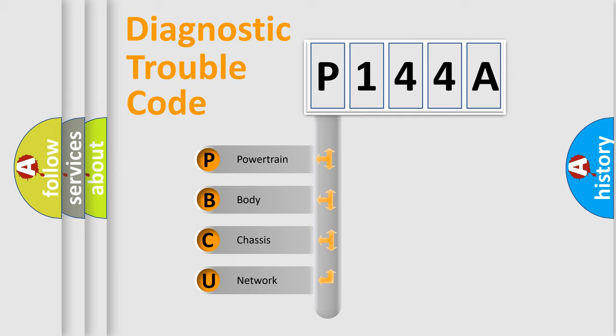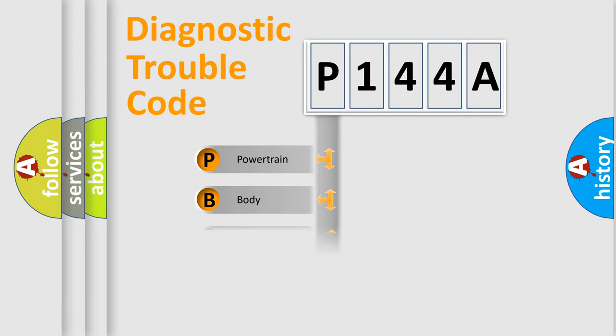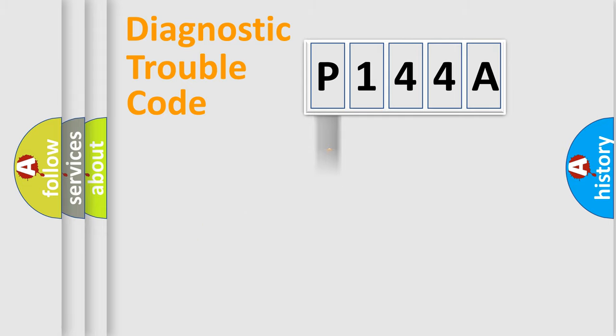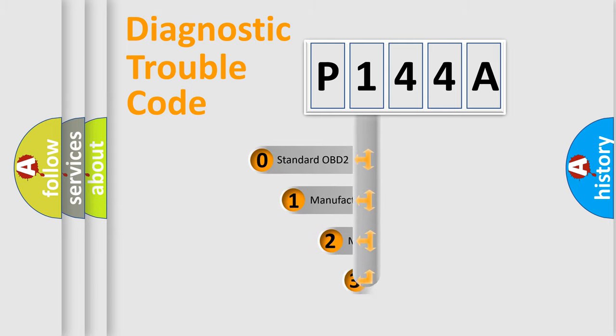We divide the electric system of an automobile into four basic units: Powertrain, Body, Chassis, and Network. This distribution is defined in the first character of the code.